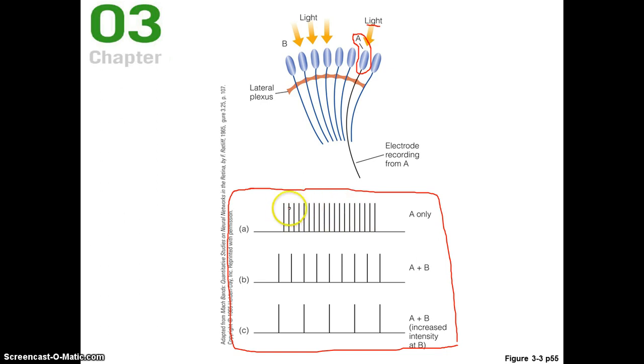This is pretty rapid firing. If you remember, each one of these little hash marks indicates that an action potential has occurred. Shining a spot of light onto just a single photoreceptor, onto A only, increases the firing rate. It increases the rate at which that cell generates action potentials. So we knew that already.